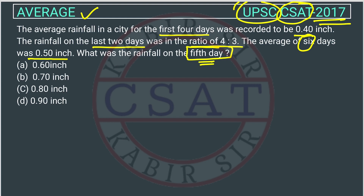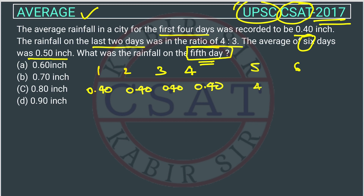We have to calculate the rainfall on the fifth day. They have given the first, second, third, and fourth days with an average of 0.40 inches, and the fifth and sixth day rainfall is in the ratio 4 is to 3. Whenever a ratio is given, we can assume a variable k, so we say fifth day is 4k and sixth day is 3k.